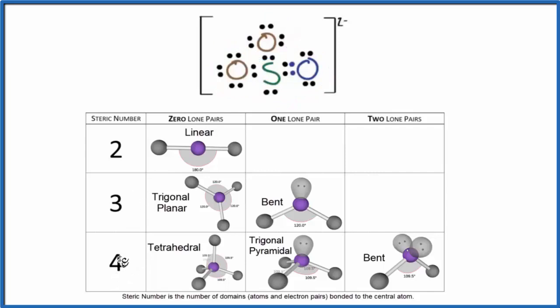So let's look at this. We say it's four, and then how many lone pairs do we have? Just the one. So with one lone pair and a steric number of four, it's trigonal pyramidal.